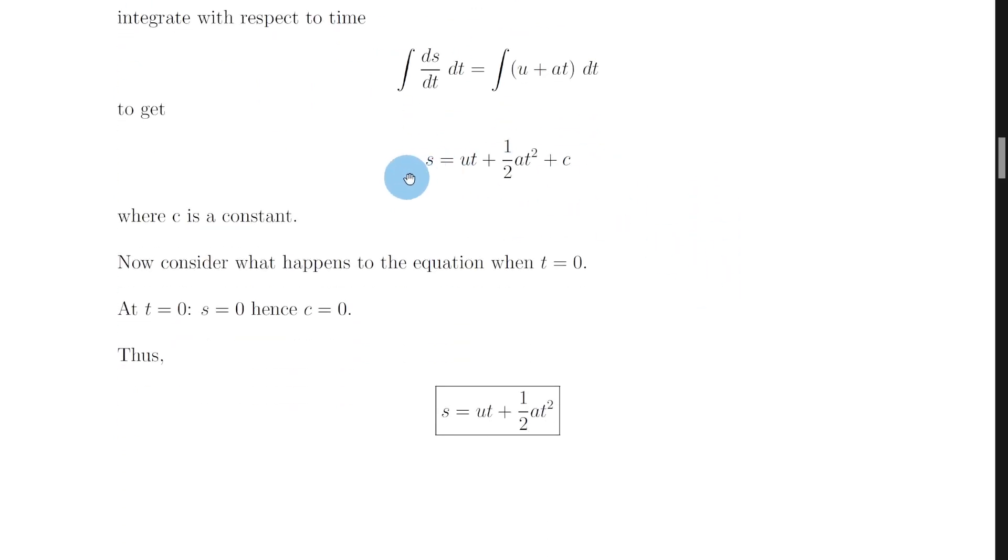So if you do that you end up with s equals ut plus a half at squared plus c where c is your constant.